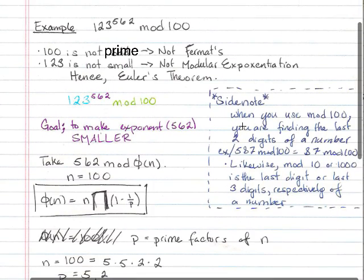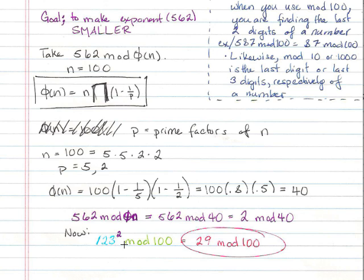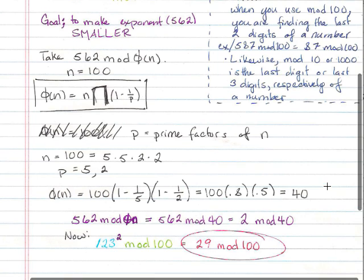So if you apply that to what we had down here, if you took 123 squared, I don't have a calculator on me. But whatever that number is, these are the last two digits of it. Just as a general interesting note.